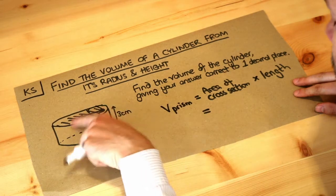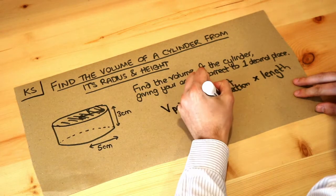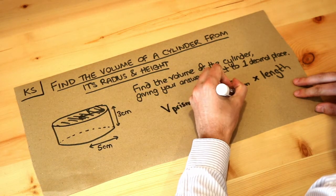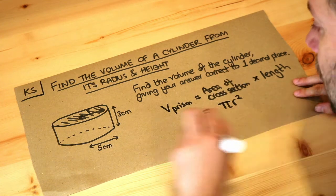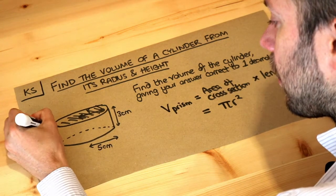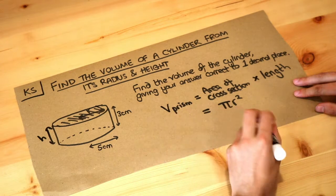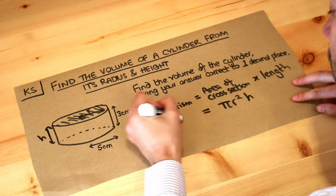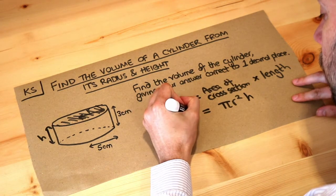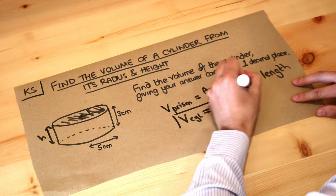then the area of the cross section would be a circle, and the area of a circle is pi r squared. So it's pi r squared, and then we're multiplying it by the length. So if we call the length h, then it would be pi r squared h. So that is the volume of a cylinder, the general formula.